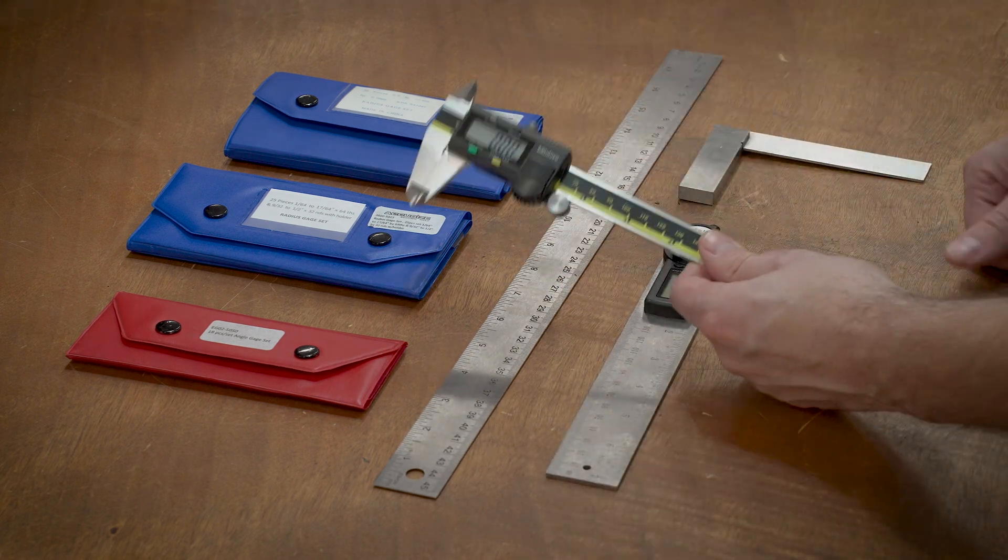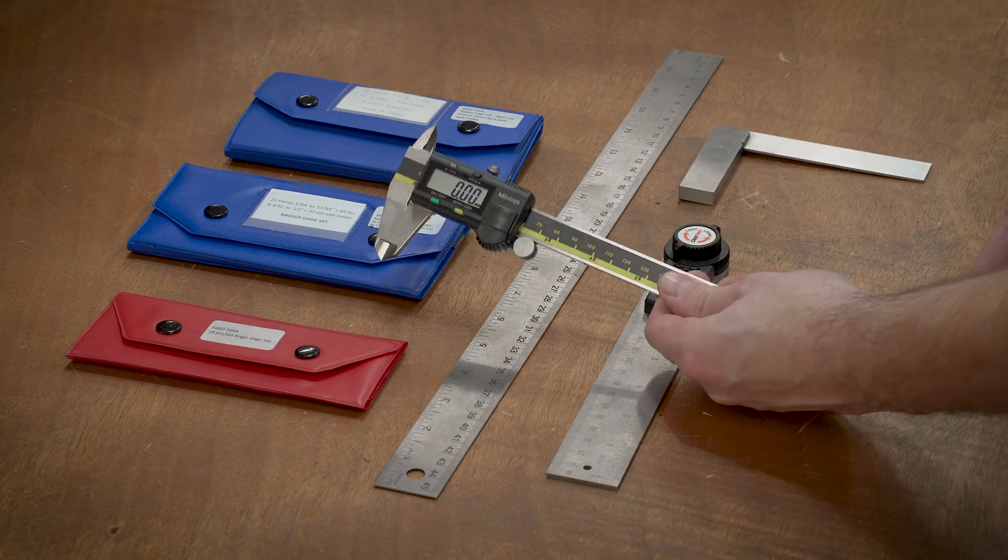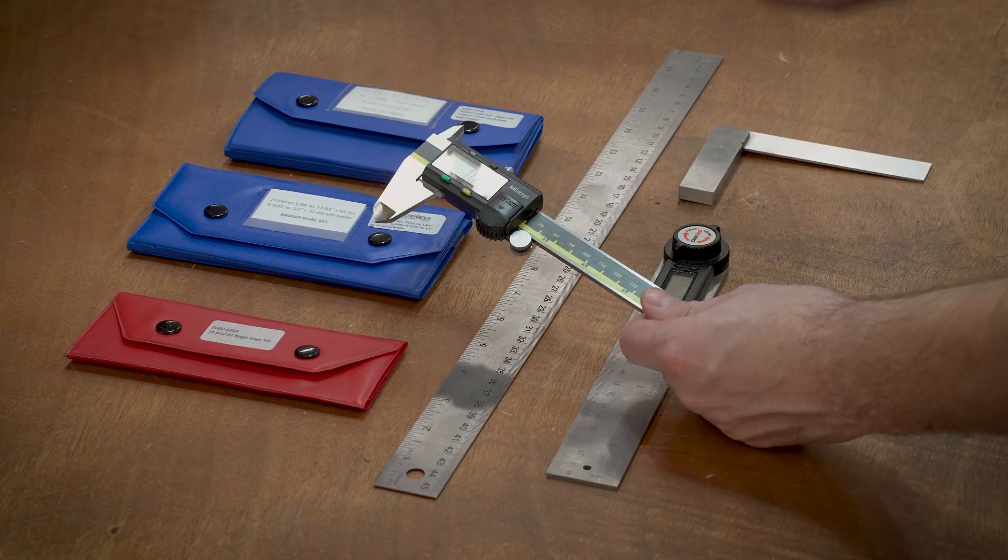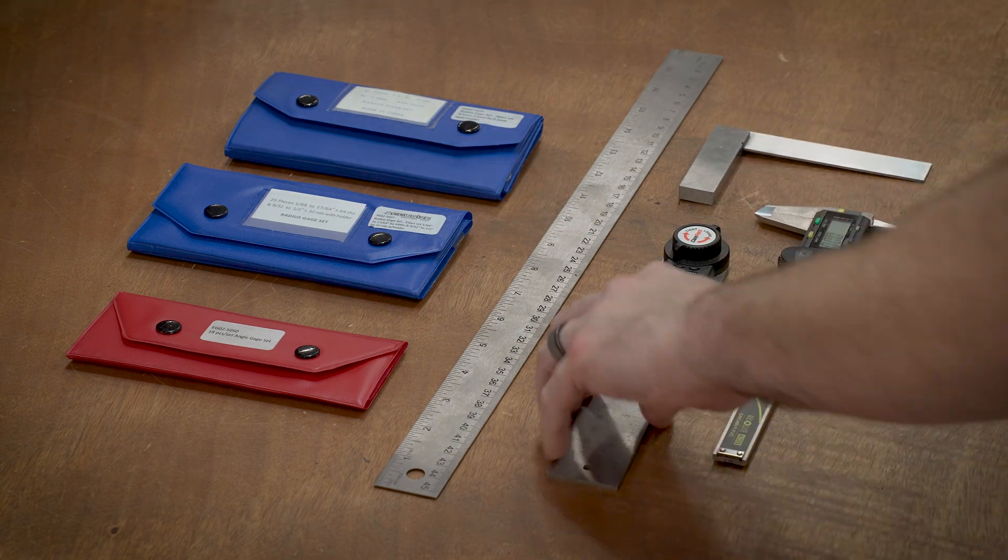Then we have the calipers, the good old classic digital calipers. This is the Mitutoyo, but I also have a pair of Neikos inside that I actually kind of like better than these sometimes. Link down below on those.